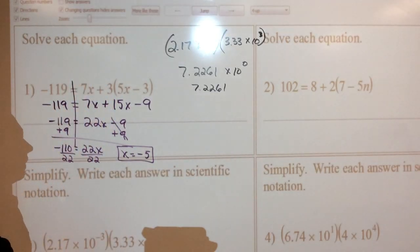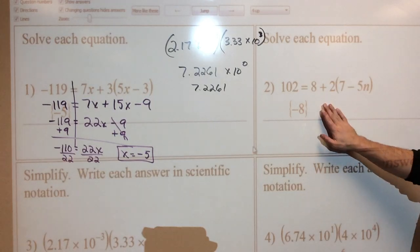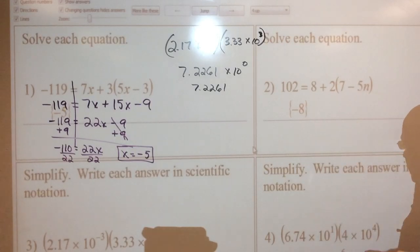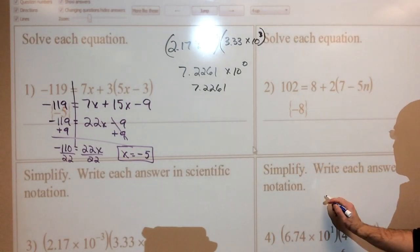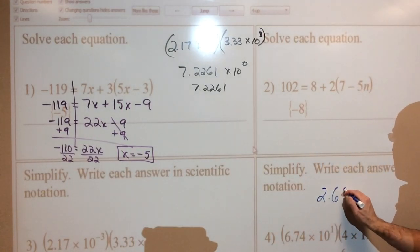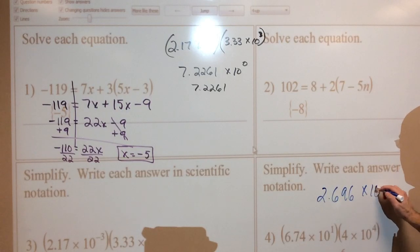Go ahead and pause me. Try to do the other two problems, and I will reveal the answers. So definitely do pause me. Hopefully you paused me and you're back. My answers are negative 8 for this equation. N equals negative 8. And for here, hopefully you saw that. The answer for this one is 2.696 times 10 to the 6th power.